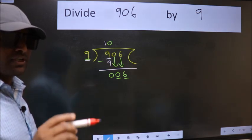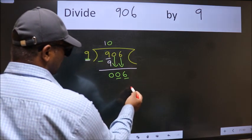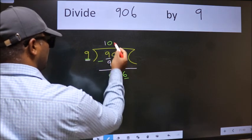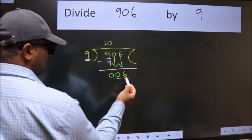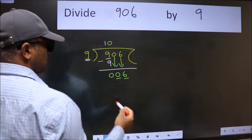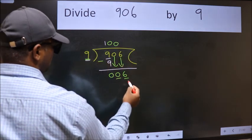Instead of that, what we should think of doing is, which number should we take here? If I take 1, we will get 9. But 9 is larger than 6. So what we do is, we take 0. So 9 into 0, 0.